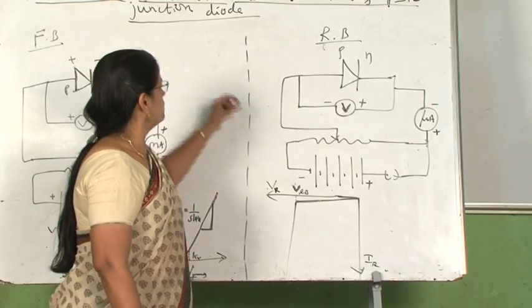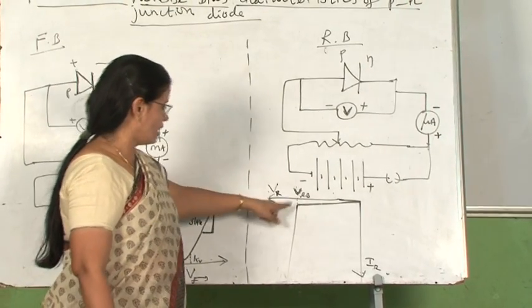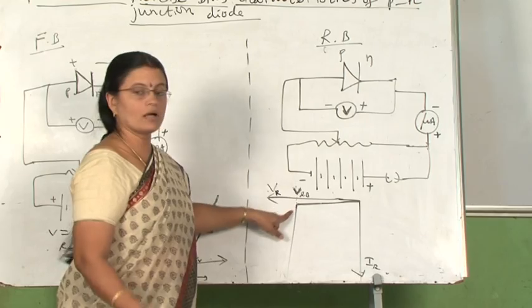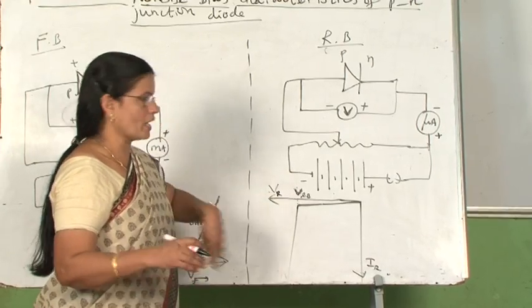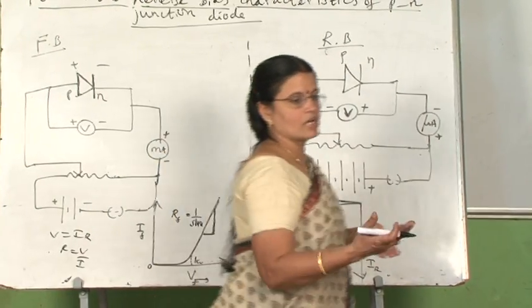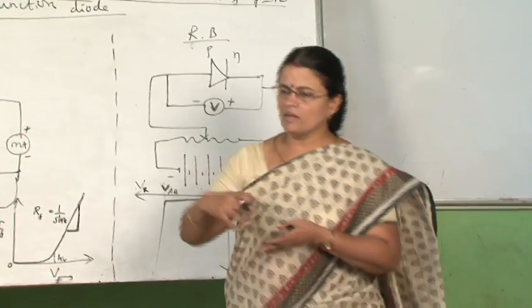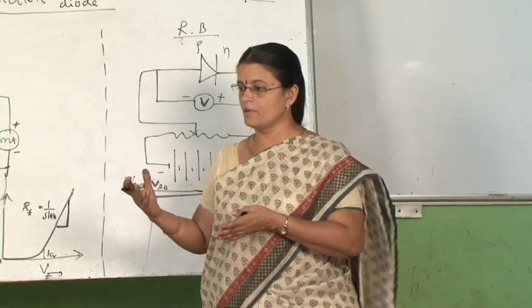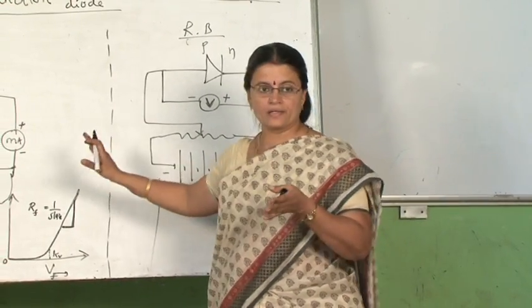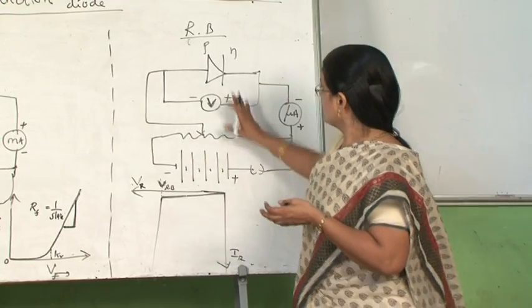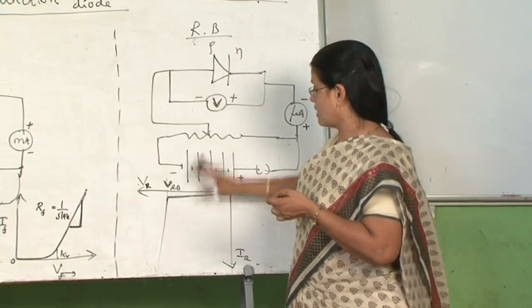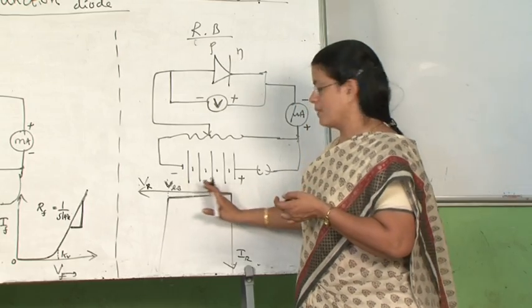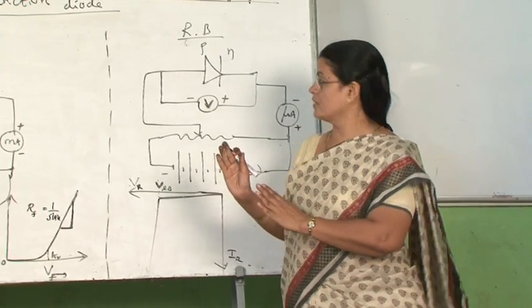Normally, the normal type of junction diodes are not operated in this region because in this region, the breakdown of junction diode will take place. That means very large number of charge carriers will be developed so that it will lose all its characteristics. So normally, general junction diodes are not operated in this region, they will be operated within the safe region of applied voltage.